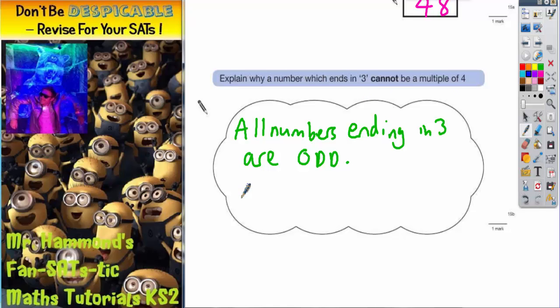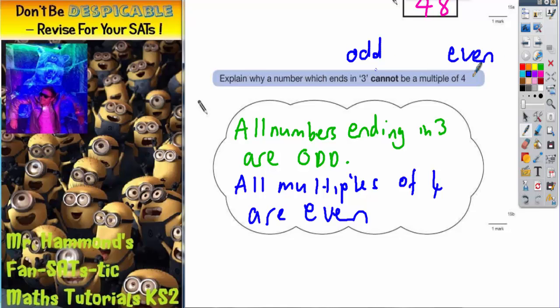But then you need to make a statement about multiples of four. So all numbers ending in three are odd, and actually all multiples of four are even. So you can't have a number that ends in three, which is going to be odd, also being a multiple of four, which is even, because you can't have an odd number that is even.